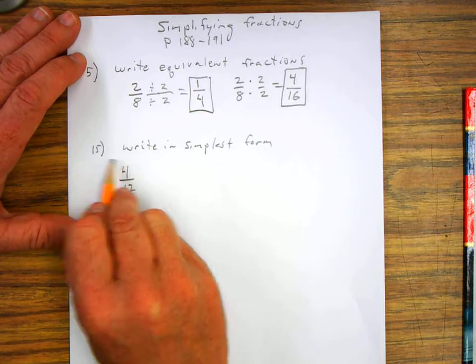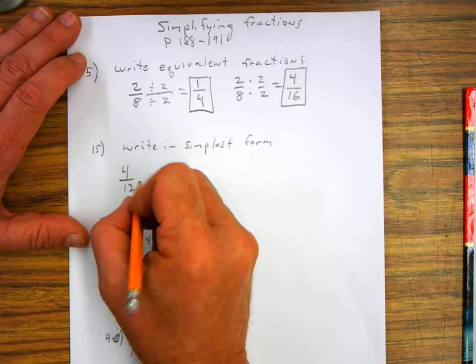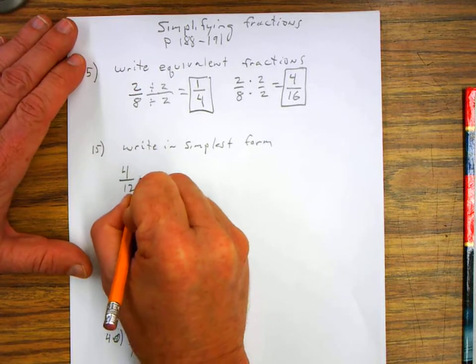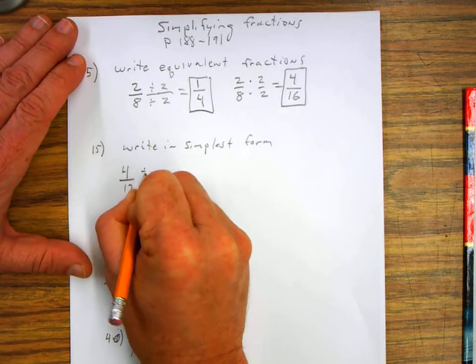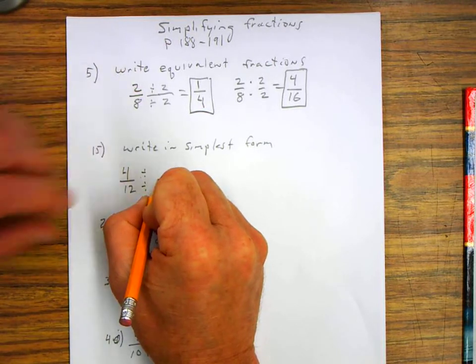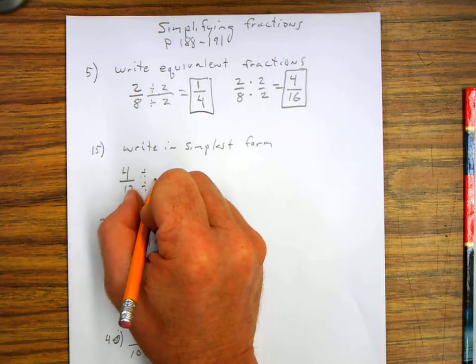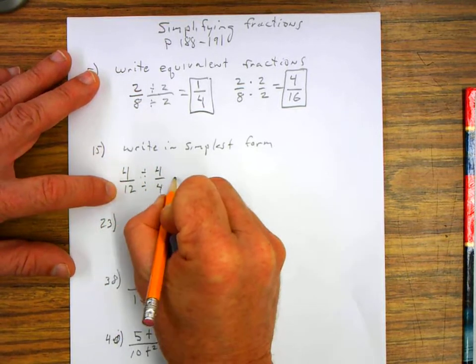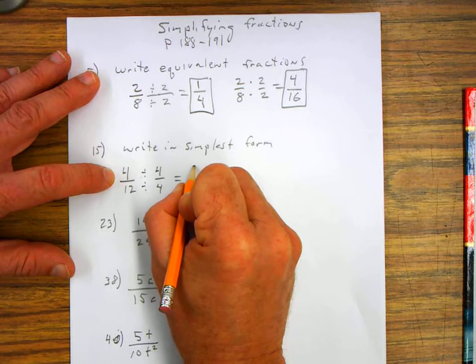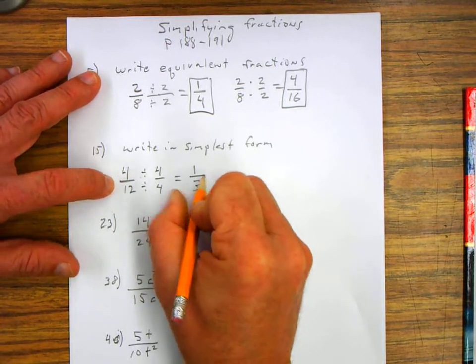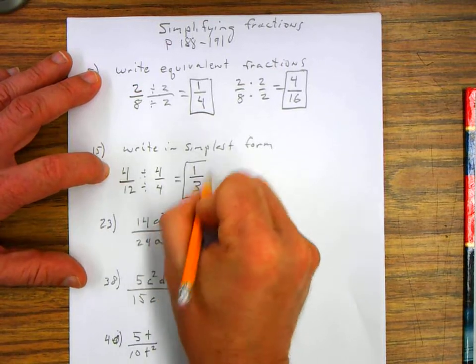Next one, number fifteen, write in simplest form. Okay, that's basically saying to reduce it. So let's divide both the top and the bottom to get it to the lowest common denominator. Okay, so four can be divided by four, and twelve can be divided by four. So that's equal to, four divided by four is equal to one, twelve divided by four is equal to three. That's in its simplest form.